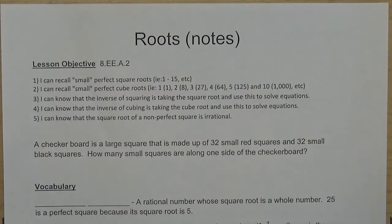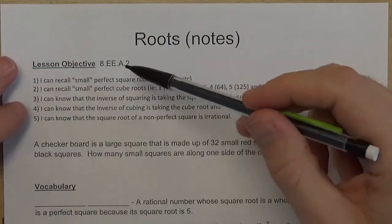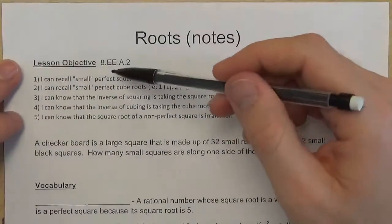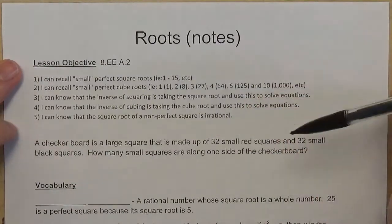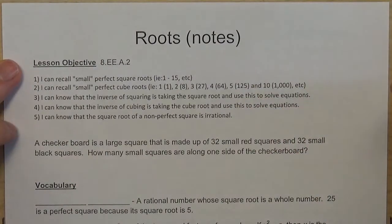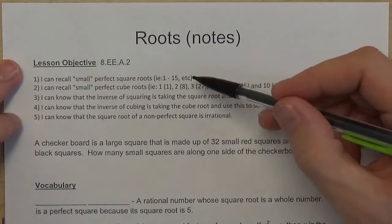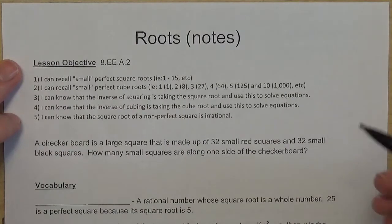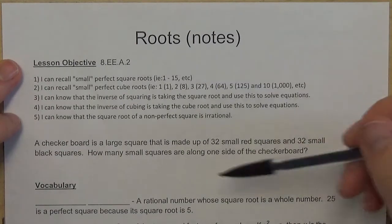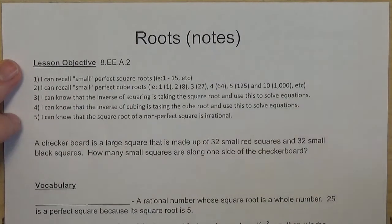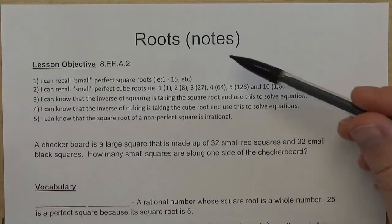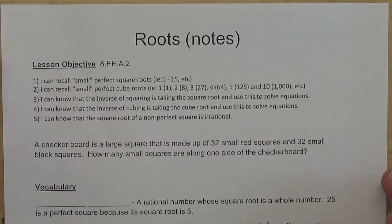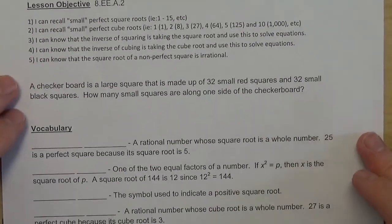Let's take a look at our notes on roots. You've got some lesson objectives here to kick things off — five of them, which is quite a few. You may not feel like you've mastered all of these by the end of the lesson, but as we work through the assignment, bell work, and get ready to test, you should be able to say you can do all of these things. We'll revisit them in class after going through vocabulary and some practice problems.